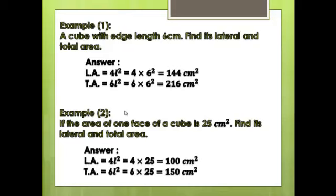Lateral area = 4L² = 4 × 25 = 100 cm². Total area = 6L² = 6 × 25 = 150 cm².